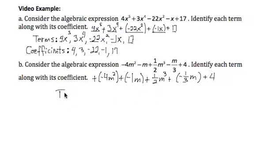So let's list the terms. I'm just going to put a T this time. So I have negative 4m squared, negative 1m, 1 half m cubed, and negative 1 third m, and 4. And be careful when these fractions are present.